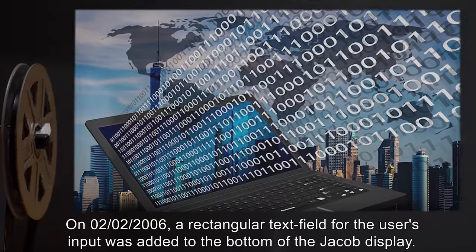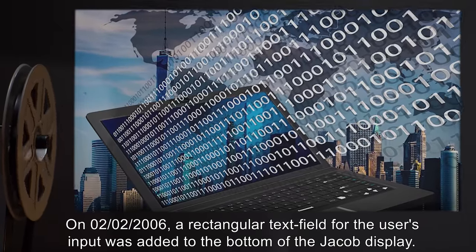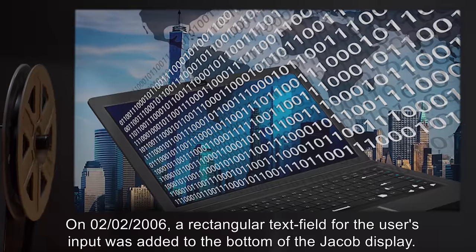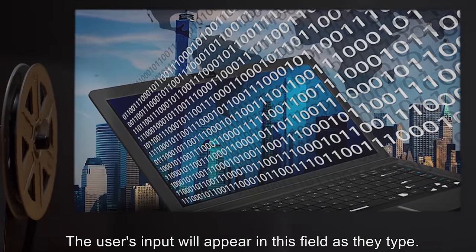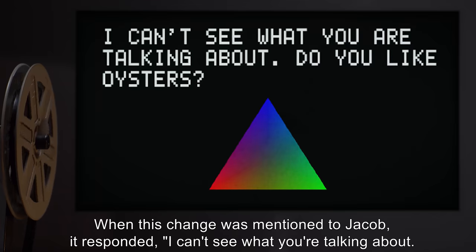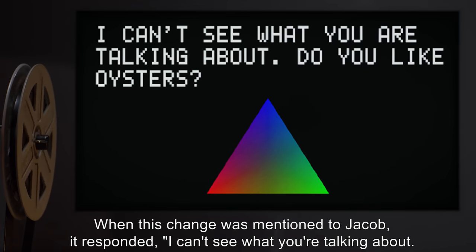On 02-02-2006, a rectangular text field for the user's input was added to the bottom of the Jacob display. The user's input will appear in this field as they type. When this change was mentioned to Jacob, it responded, I can't see what you're talking about. Do you like oysters?